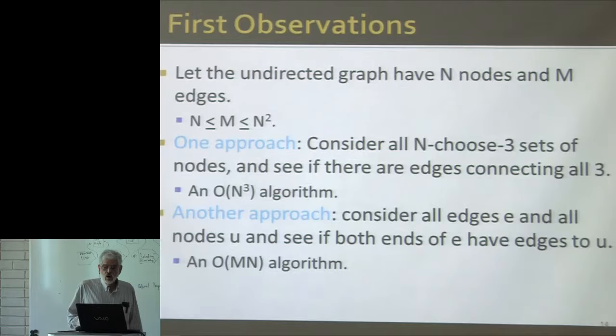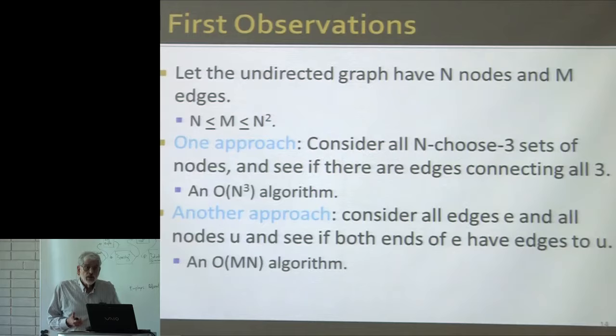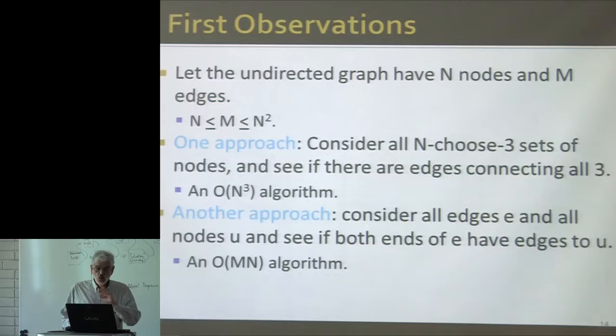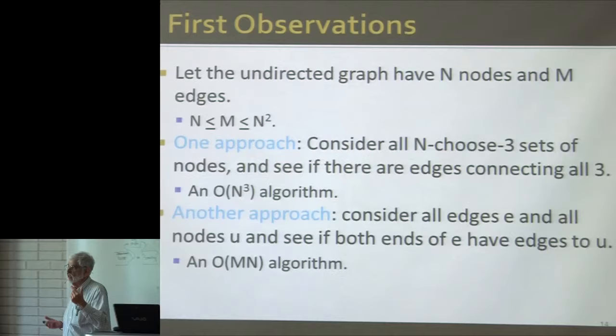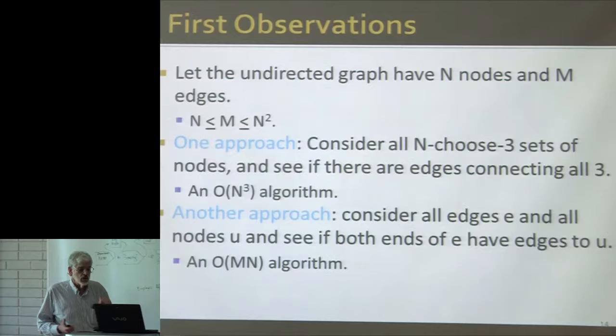A slightly better approach is to consider each of the m edges, and then consider all nodes other than the two endpoints of that edge — so that's order n different nodes — and see if that node u has connections to both ends of e. If I've set up the right data structures, I can answer those questions in order one time each, so this gives me an order m times n algorithm. That can't be worse and could be better than the consider-all-sets-of-three-nodes approach, because m can't be bigger than n squared.